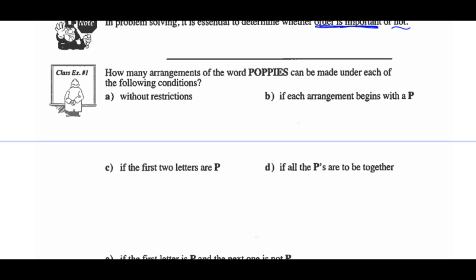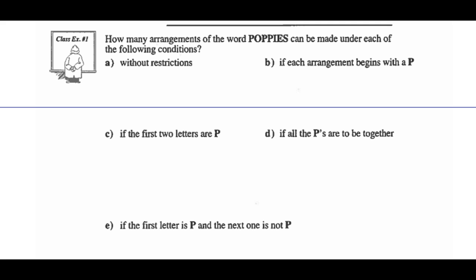Example 1: How many arrangements of the word POPPIES can be made under each of the following conditions? Part A — without any restrictions. There are 7 letters, so that's 7 factorial. However, there are also 3 P's, so we divide out the like elements: 7 factorial divided by 3 factorial. That gives us 7 times 6 times 5 times 4, or 840.